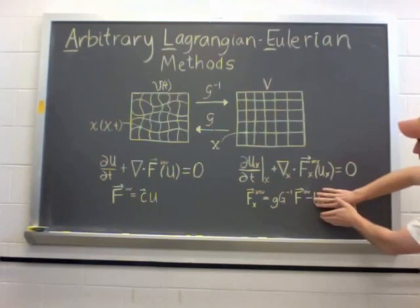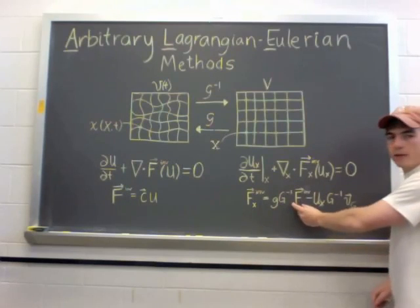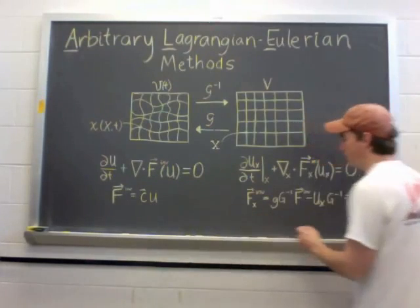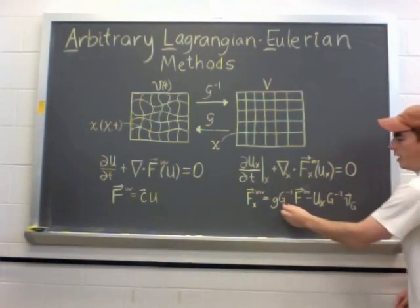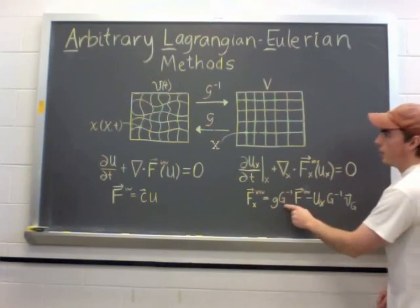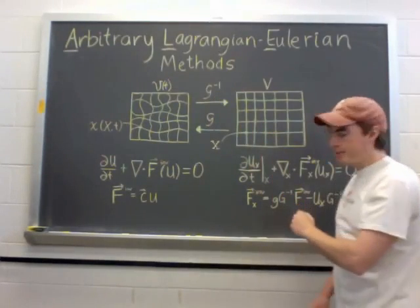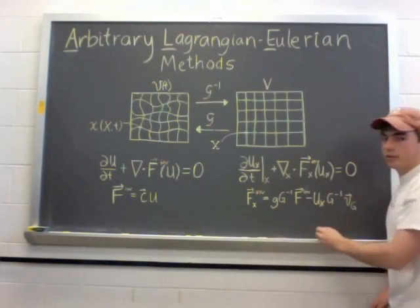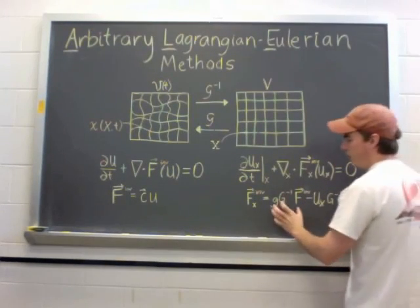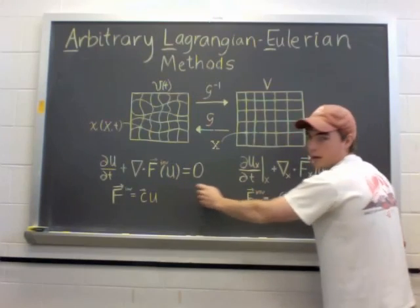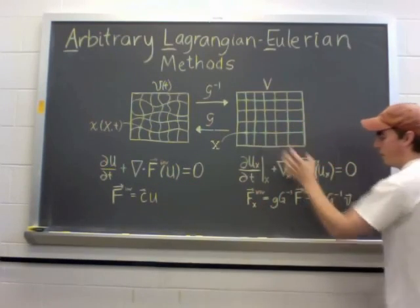So ignoring this for a second, we have the standard inviscid flux that we had before. So this is the convection equation. And then G inverse is the Jacobian of the inverse mapping. And little g is the determinant. So this is kind of like this flux function mapped to this domain.